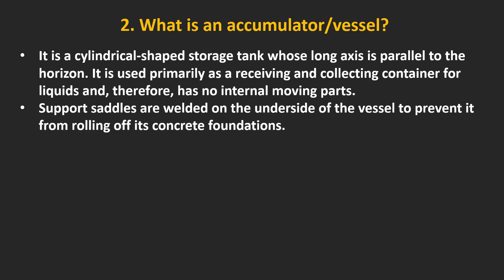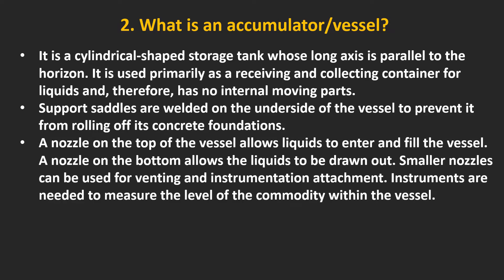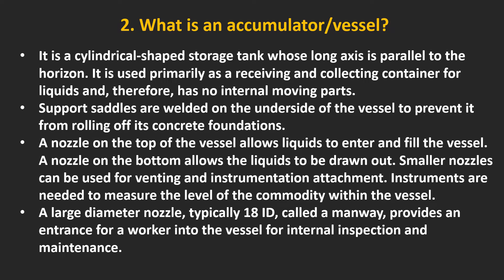Support saddles are welded on the underside of the vessel to prevent it from rolling off its concrete foundation. A nozzle on the top of the vessel allows liquids to enter and fill the vessel; a nozzle on the bottom allows the liquids to be drawn out. Smaller nozzles can be used for venting and instrumentation attachment. Instruments are needed to measure the level of the commodity within the vessel. A large diameter nozzle, typically 18 inch ID, called a manway, provides an entrance for a worker into the vessel for internal inspection and maintenance.